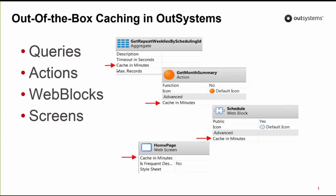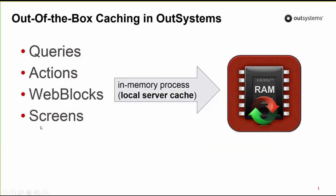You just need to use the cache-in-minutes attribute to do so, as you can see in this aggregate, in this action, in this web block, and also on the screen. Now, what we need to be aware of is that the cache is an in-memory process that stores data only temporarily from query results, action results, and rendered screen data. This means that the data being stored is going to be stored in RAM memory, using resources from the OutSystems front-end servers.